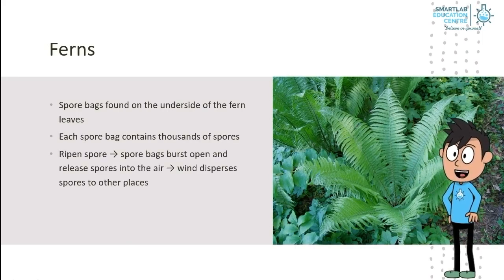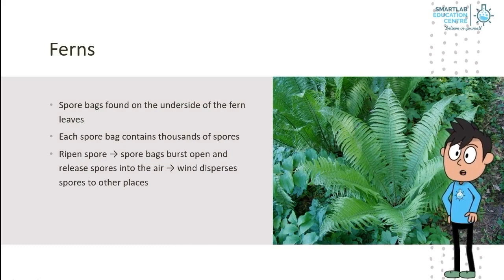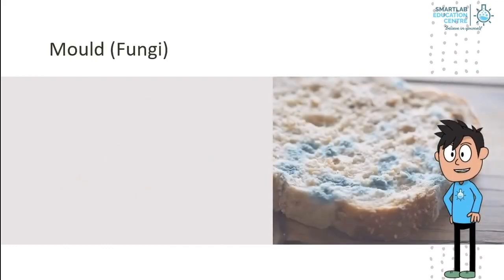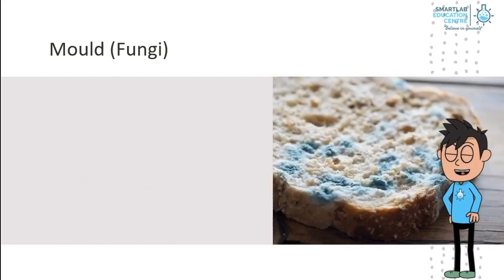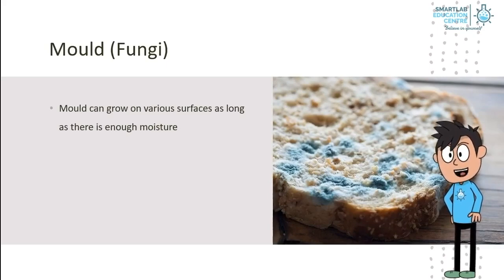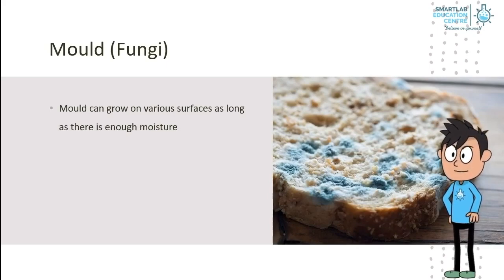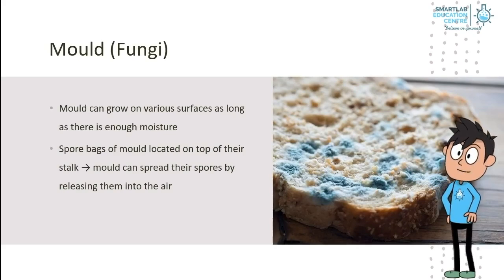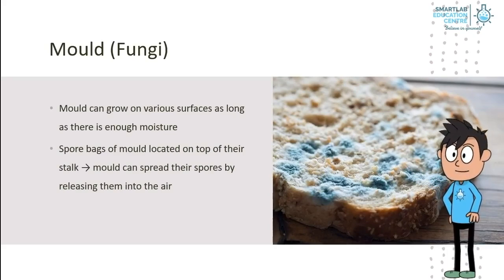When the spores are ripe, the spore bags will burst open and release spores into the air. The wind disperses the spores to other places. Lastly, let's take a look at mold. Mold can grow on various surfaces as long as there is enough moisture. The spore bags of mold are located at the top of their stalk. The mold can spread their spores by releasing them into the air.